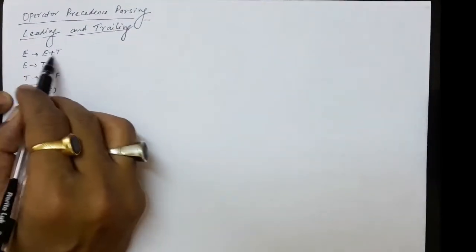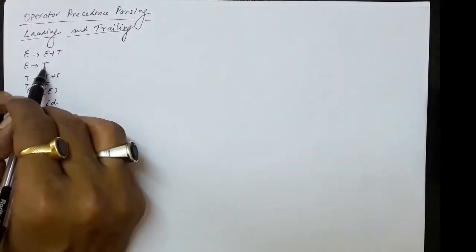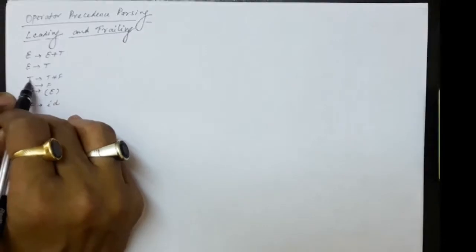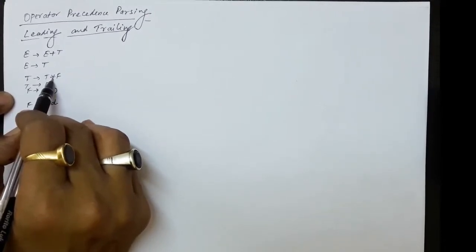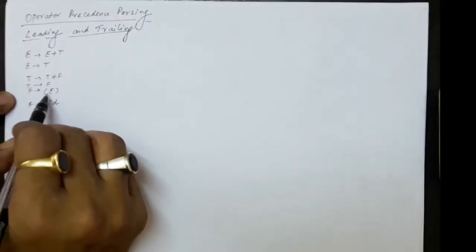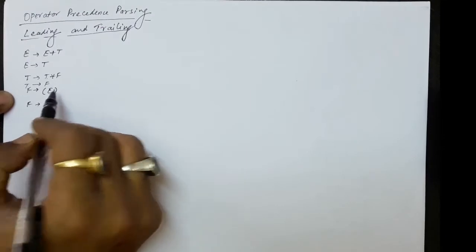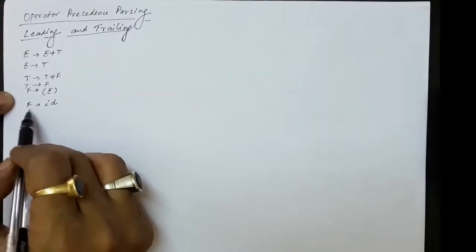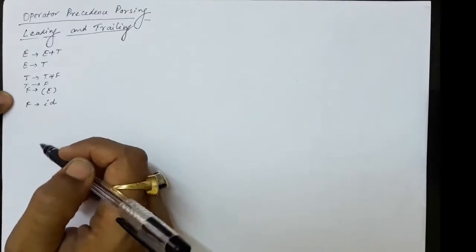In E produces E plus T, between two non-terminals there is a terminal symbol plus. E produces T is simply a non-terminal. T produces T star F has an operator symbol between T and F. T produces F is a single non-terminal. F produces (E) has terminal, non-terminal, terminal - no issue. F produces ID is a terminal symbol. So this is an operator grammar.